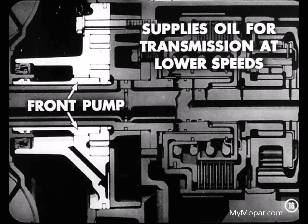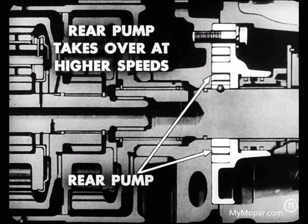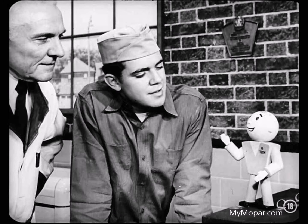The larger front pump supplies oil in sufficient volume to take care of the needs of the transmission and converter at lower speeds. As soon as the car gets rolling, the smaller rear pump begins to supply oil and build up pressure. When the pressure becomes greater than the regulated pressure of the front pump, the rear pump will take over and supply all the needs of the transmission and the torque converter. When that happens, the volume from the front pump is bypassed to the intake side of the pump, so oil is merely circulated within the pump.